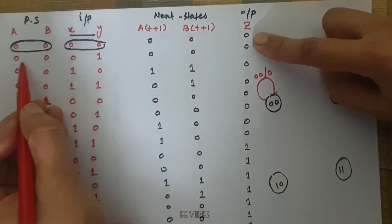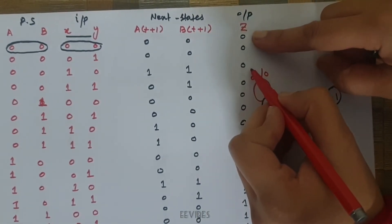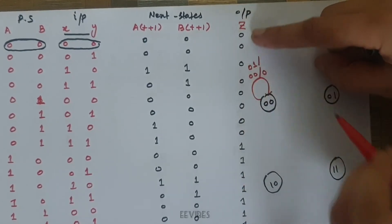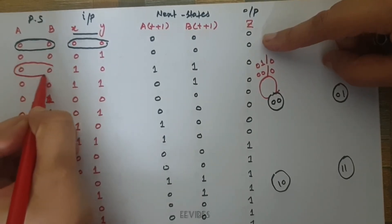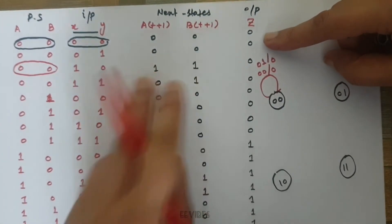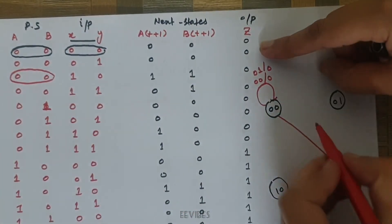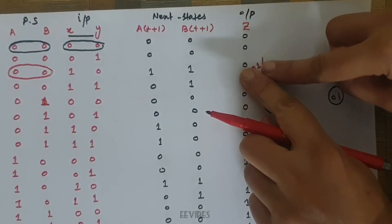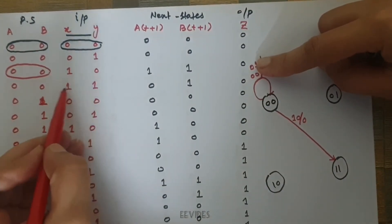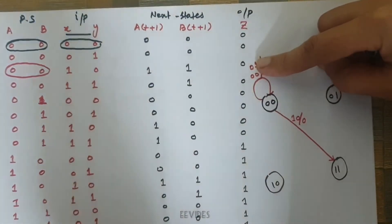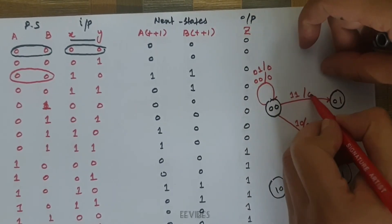When in state 00 with input 1,0 we go into state 11, giving output equal to 0. Then, when in state 00 with input 1,1, we go into state 01 with output equal to 0. In this way we have drawn 4 paths from state 00, where 2 paths return to the initial reset state. Moving to the next state 01: being in state 01 with input 0,0 we go to state 00. Being in state 01 with input 0,1 we again go to state 00 with output 0.